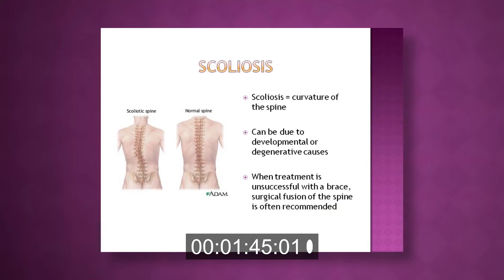Scoliosis is a curvature of the spine that can be due to developmental or degenerative causes. When treatment is unsuccessful with a brace, surgical fusion of the spine is often recommended.